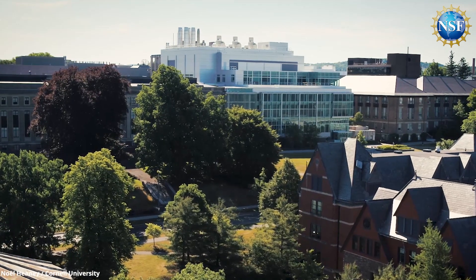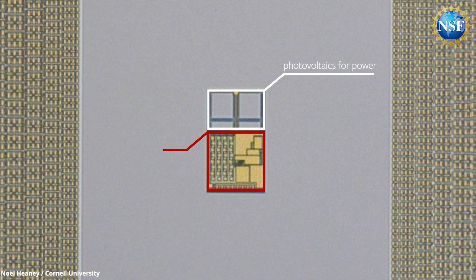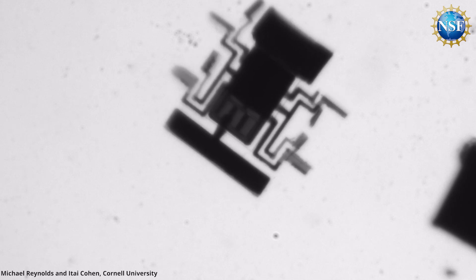For the first time, a collaborative research team of electrical and computer engineers at Cornell University, with support from NSF, has installed electronic brains on solar-powered microbots the size of a human hair.